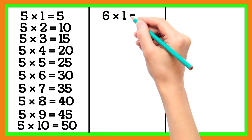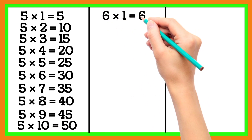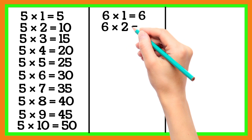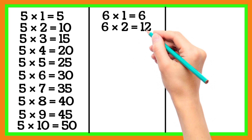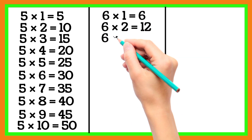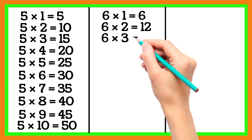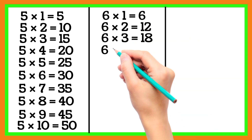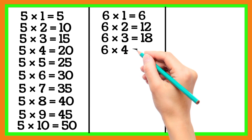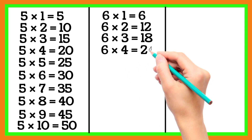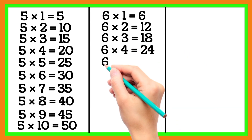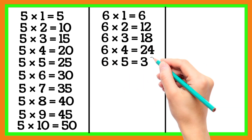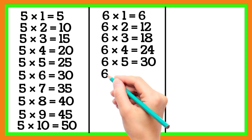6 1 is 6, 6 2 is 12, 6 3 is 18, 6 4 is 24, 6 5 is 30.